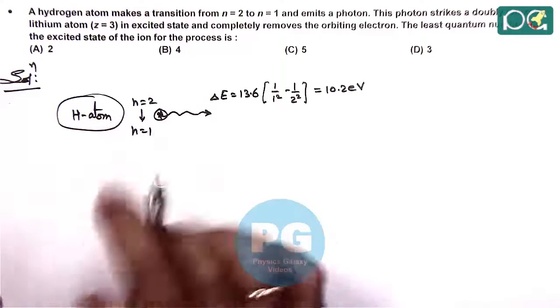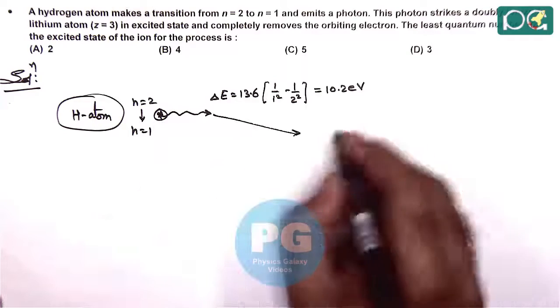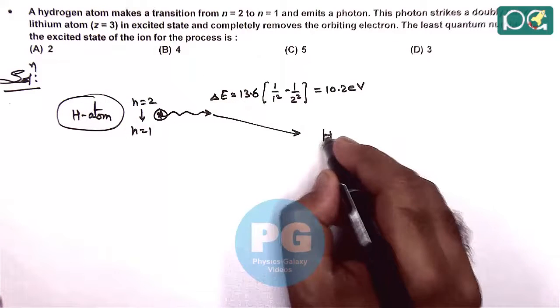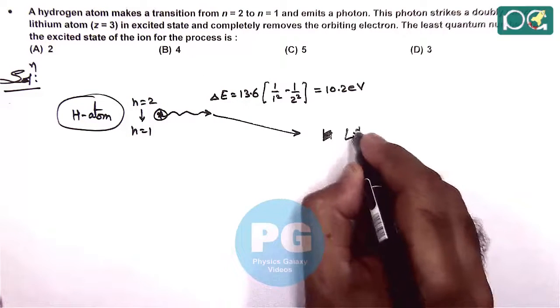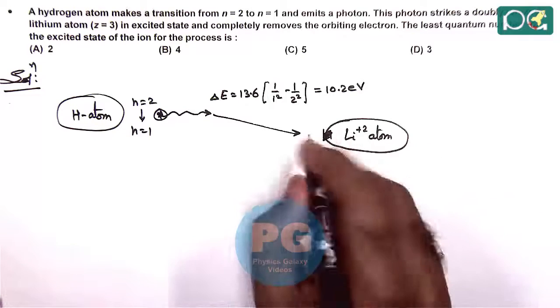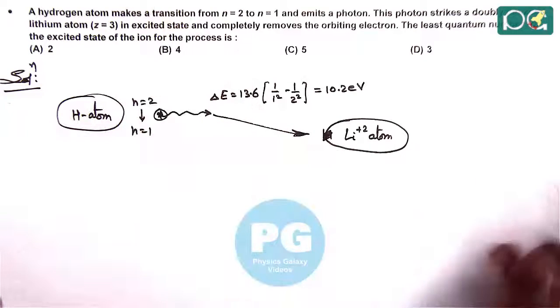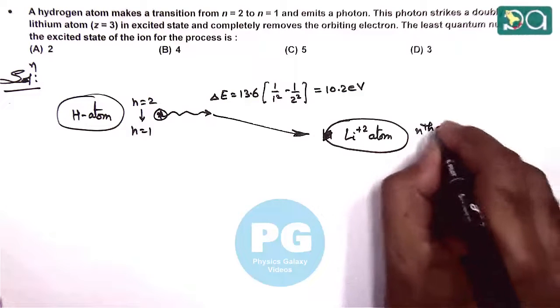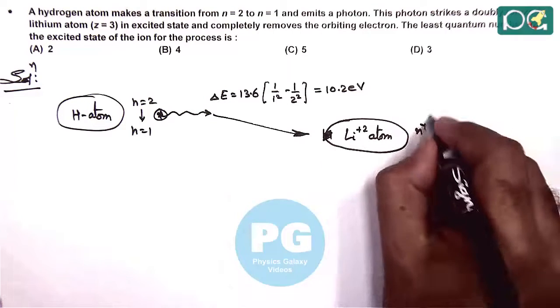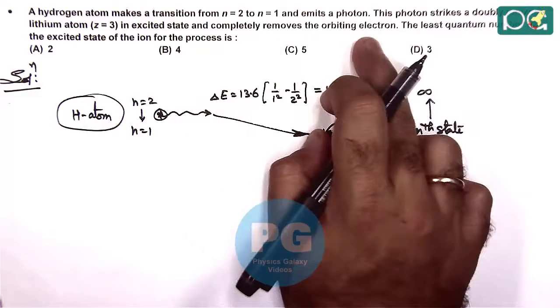A photon is emitted from the hydrogen atom corresponding to this transition. This photon is incident on a doubly ionized lithium atom (Li²⁺), which is already in an excited state. Due to this photon, it is excited to infinity because it completely removes the orbiting electron.